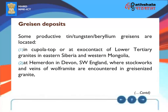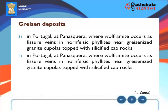Some productive tin-tungsten-beryllium greisens are located: (1) in cupola tops or at exocontacts of lower Tertiary granites in eastern Siberia and western Mongolia; (2) at Hemerdon in Devon, southwest England, where stockworks and veins of wolframite are encountered in greisenized granite; (3) in Portugal at Panasqueira, where wolframite occurs as fissure veins in hornfelsic phyllites near greisenized granite cupolas topped with silicified cap rocks.